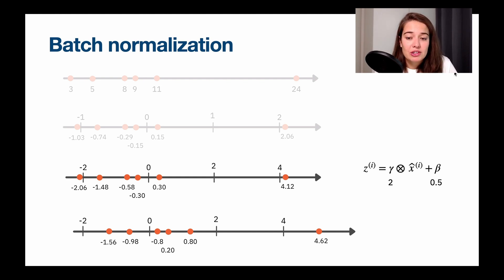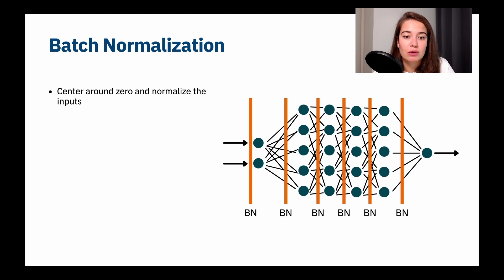This batch normalization technique works very well with dealing with the unstable gradients problem, but it also has some other benefits. So what are those? We can achieve the same accuracy that we achieve without batch normalization much faster in a much faster way. And it can most of the time lead to a better performance.